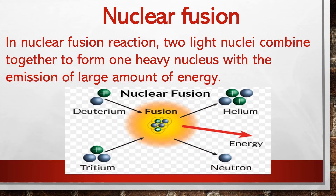Here is the example for nuclear fusion reaction. Deuterium is an isotope of hydrogen, and tritium is also an isotope of hydrogen. These two isotopes of hydrogen combine to form helium and a neutron. When these two small nuclei fuse together, at the end we get helium and one neutron with the release of a large amount of energy. This is a simple example for nuclear fusion reaction.